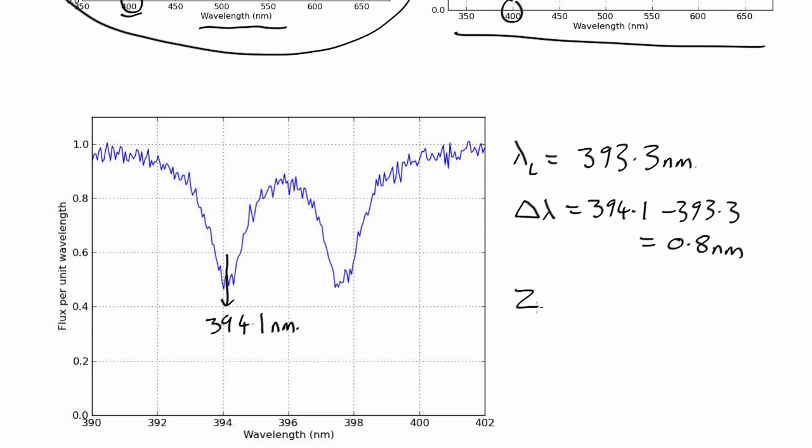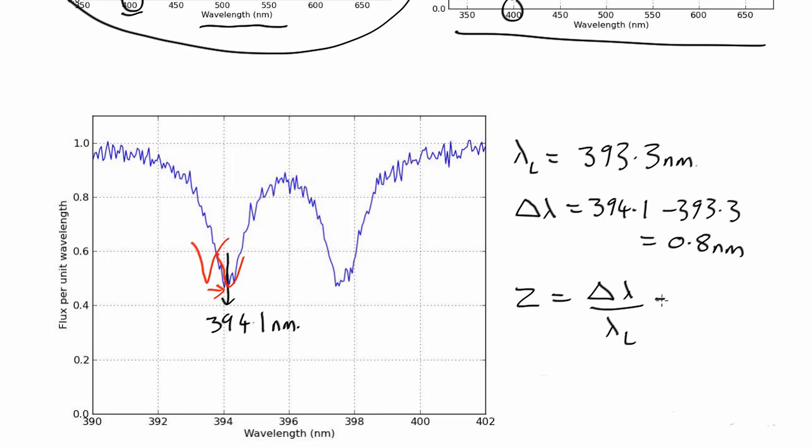The redshift, written as z, is defined as delta lambda over the lab wavelength. So that's 0.8 over 393.3, which is 0.002. That's our redshift.